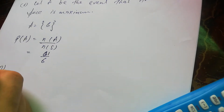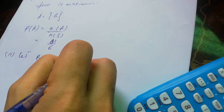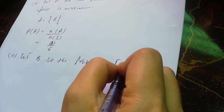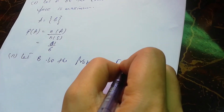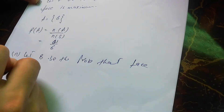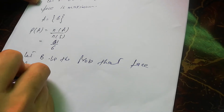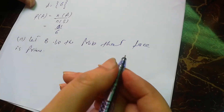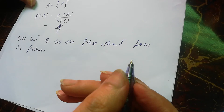Now for the second probability, let B be the event that the number on the face is prime. We need to identify the prime numbers from our sample space.